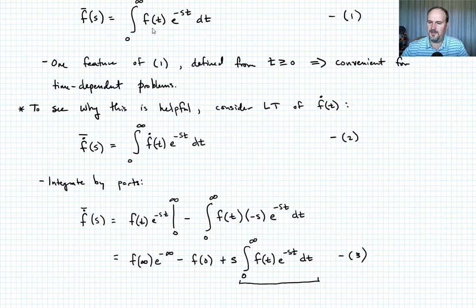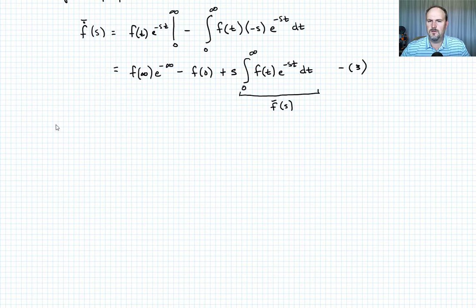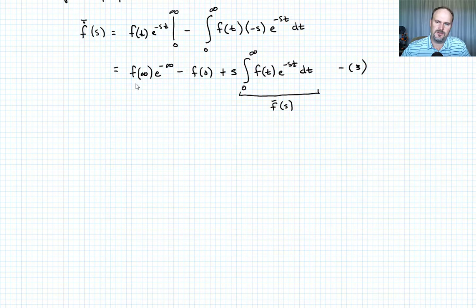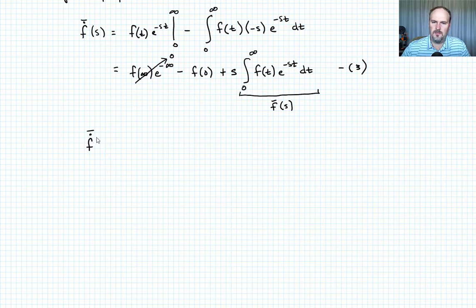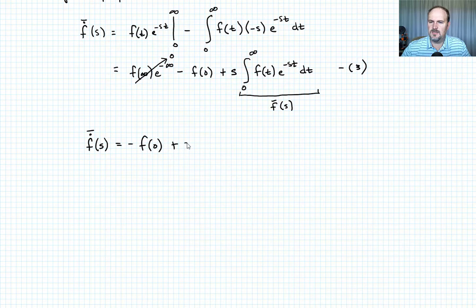That integral in equation three is exactly F-bar(S) from equation one. Simplifying: e to the negative infinity is zero, so that term vanishes. We're left with F-dot-bar(S) equals negative F(0) plus S times F-bar(S). We'll call that equation four.